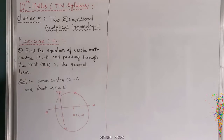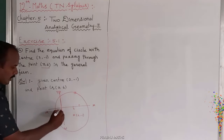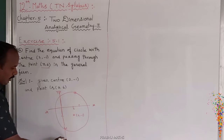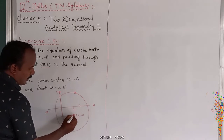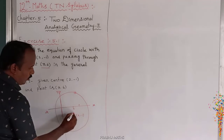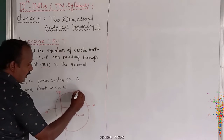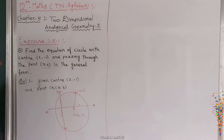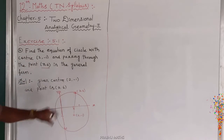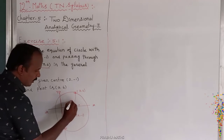The given condition is that the point (3, 6) passes through the circle. So the distance from the center to the point (3, 6) is equal to the radius.